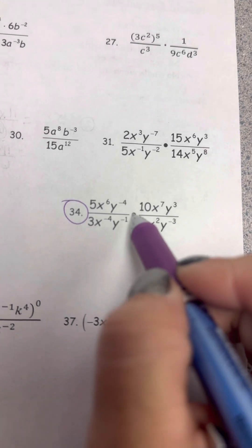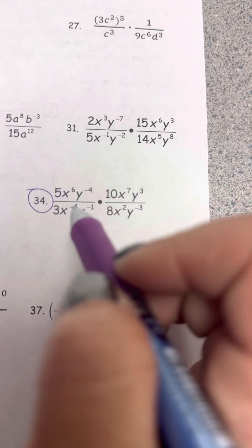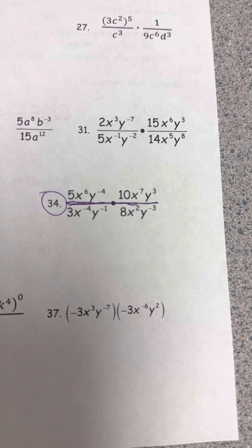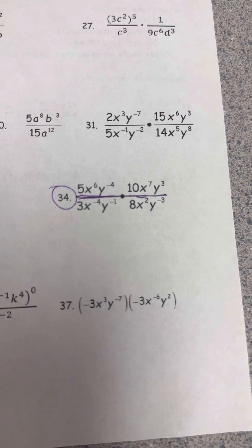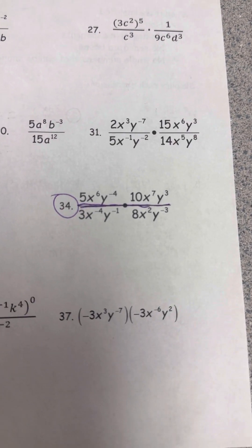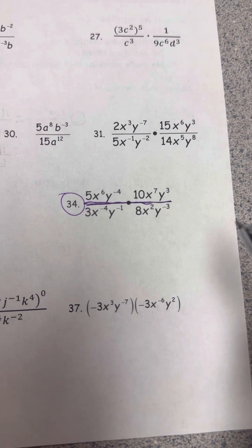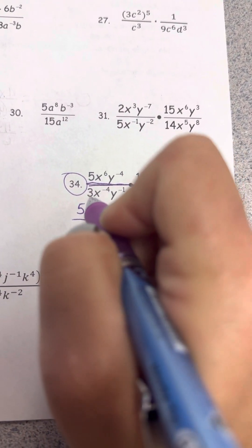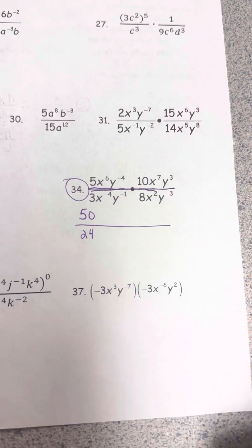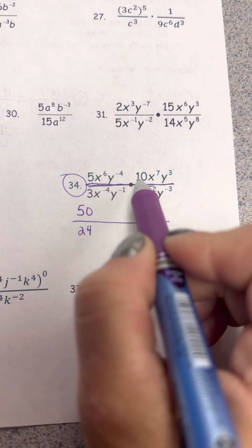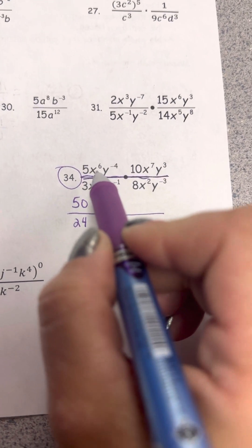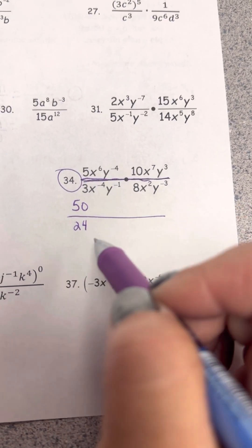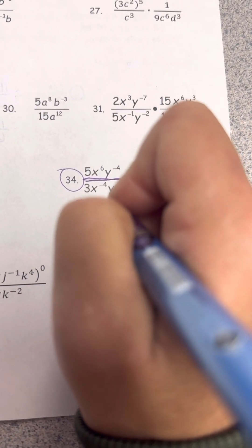For this last problem, the dot is not significant — treat all the numerator stuff as on top and denominator stuff on the bottom. I can see things to clean up: multiply 5 and 10 to get 50, and multiply 3 and 8 to get 24. Next I'll deal with all the exponents: if it has a positive exponent I leave it alone; if it has a negative exponent I move it.